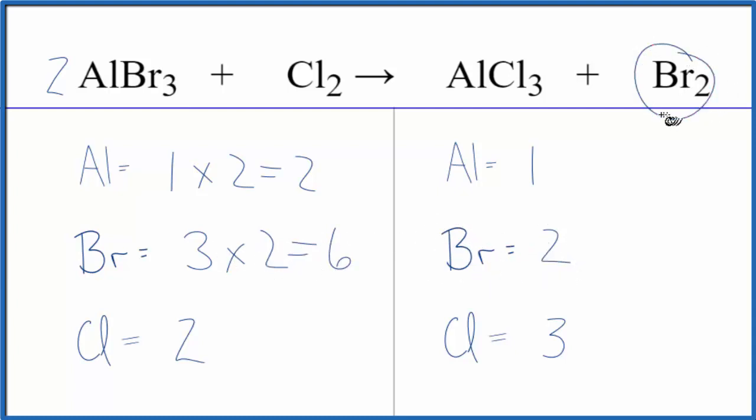And since bromine's by itself, that's pretty easy to fix. We could put a three here, two times three, that'll give us six. So that's balanced.